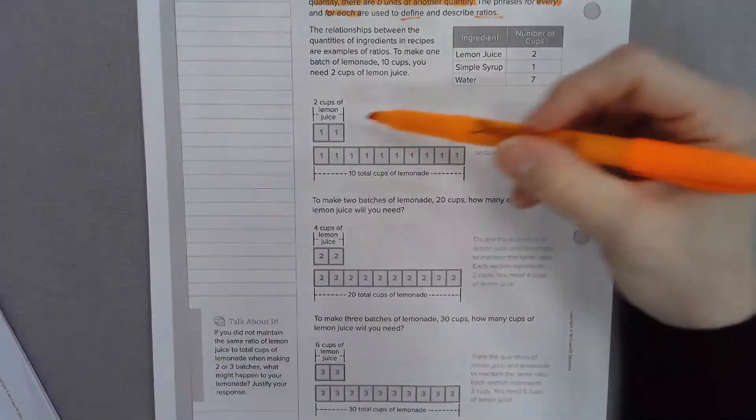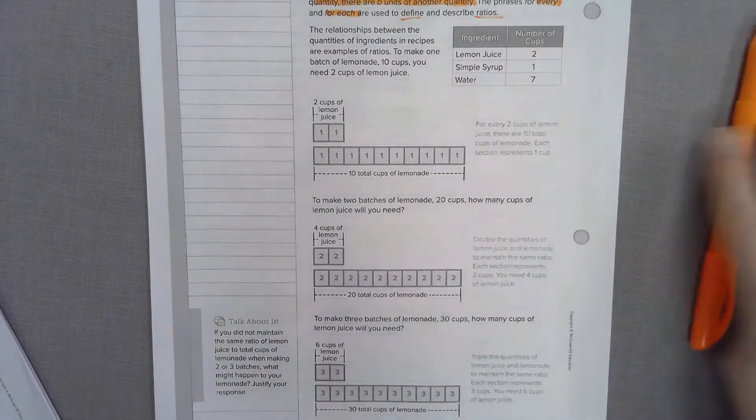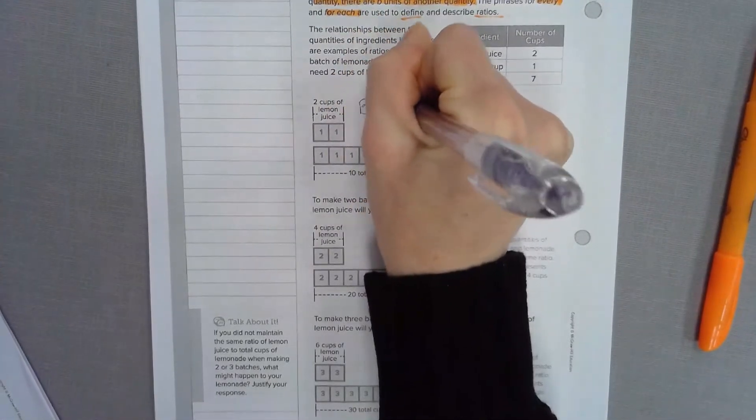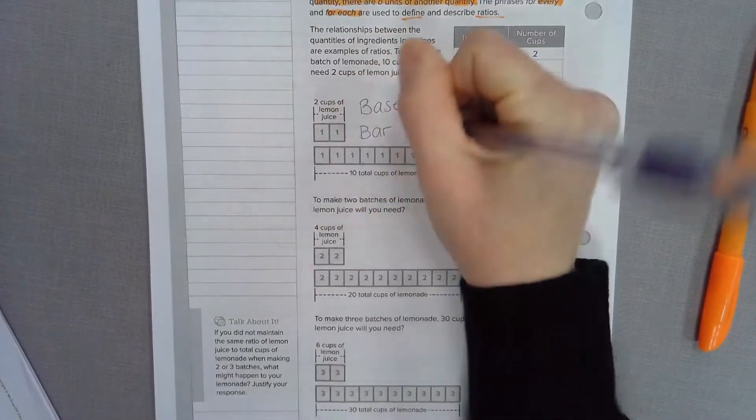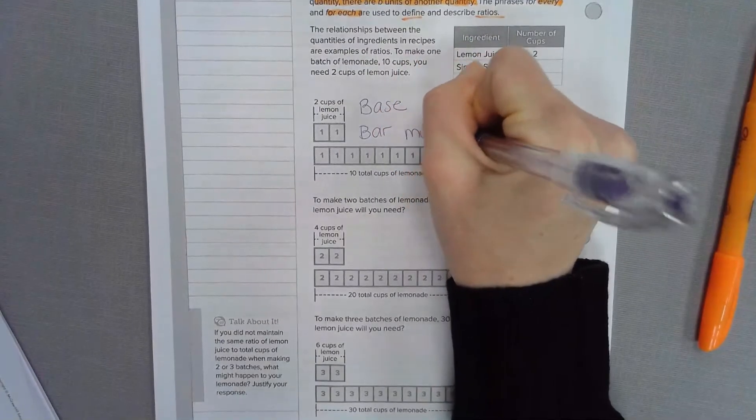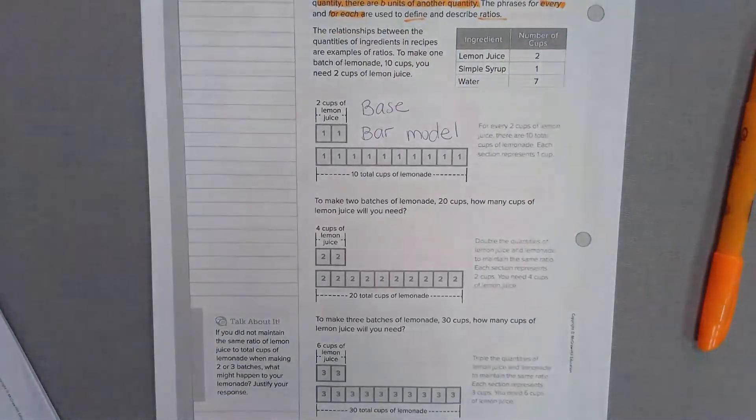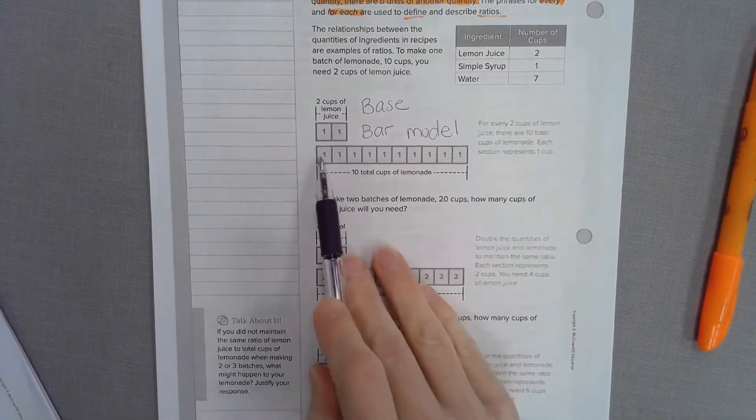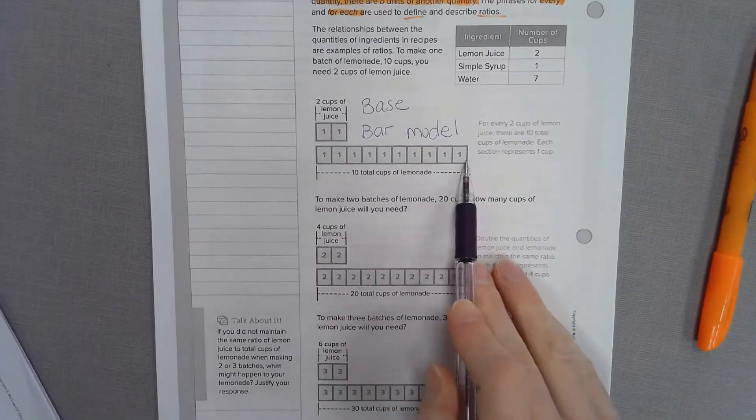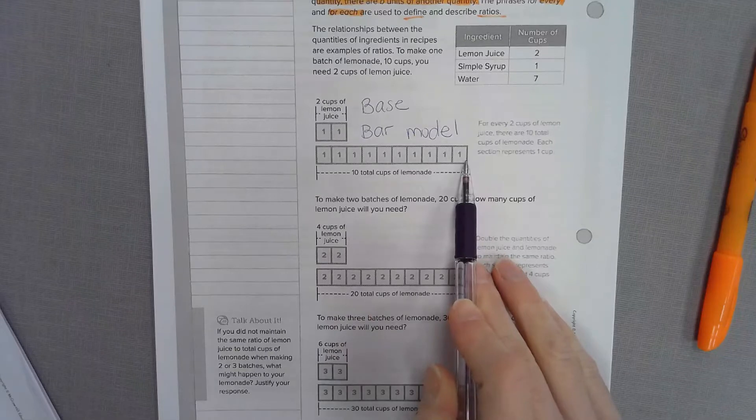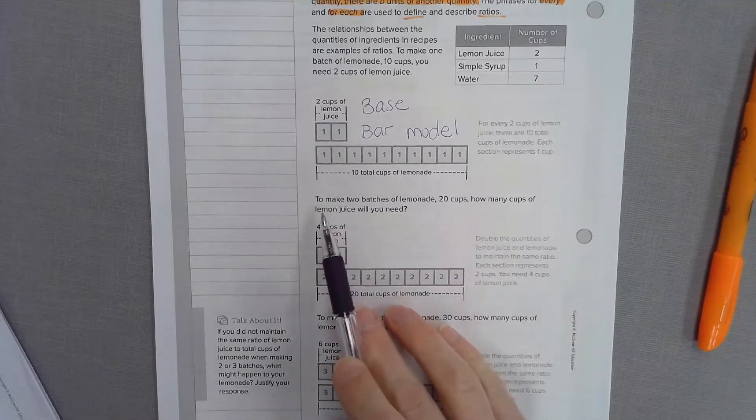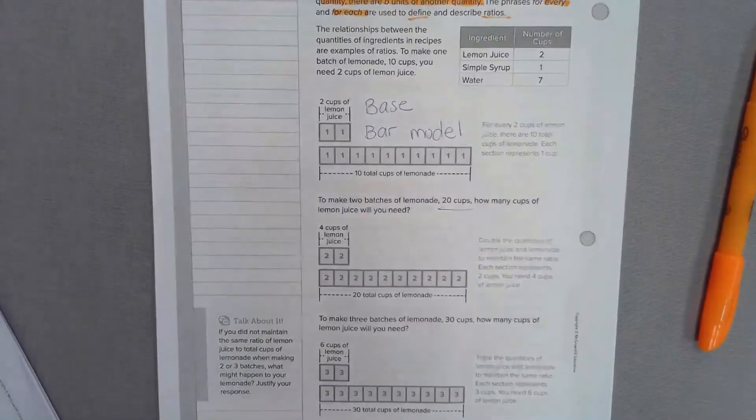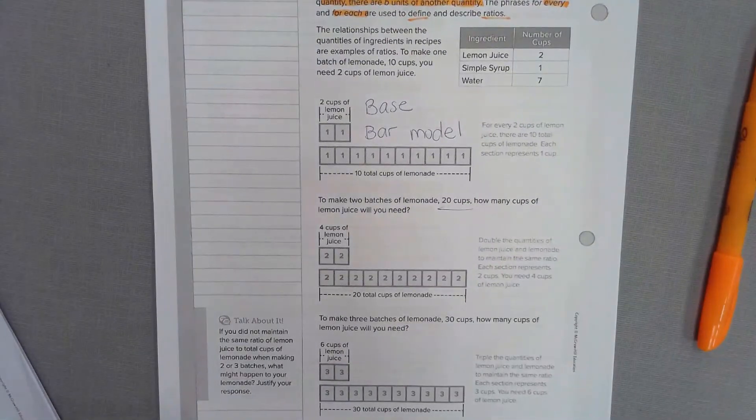Let's take a look at the table below. So we're going to do some of this during class. We're going to make bar models. So I want you to label this base bar model. This shows the 2 cups of lemon juice compared to the 10 total cups needed in the recipe. This says to make 2 batches of lemonade, you would need 20 total cups. And then it says, how much lemon juice will you need?